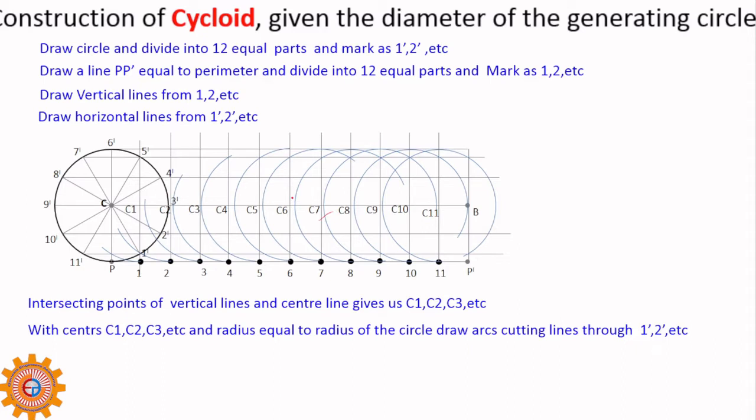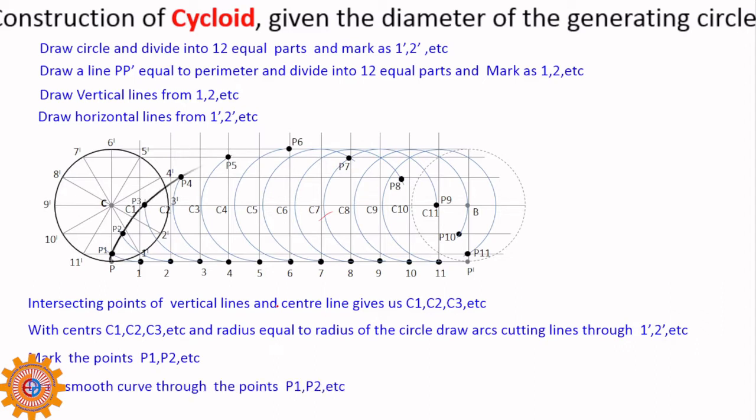Now, start. This is the traverse of this circle from point P to P dash. With the same center, that gives us the cycloid. These are the points. That is P1, P2, P3, through which we have to draw a smooth curve. That is the cycloid. I hope you understood.